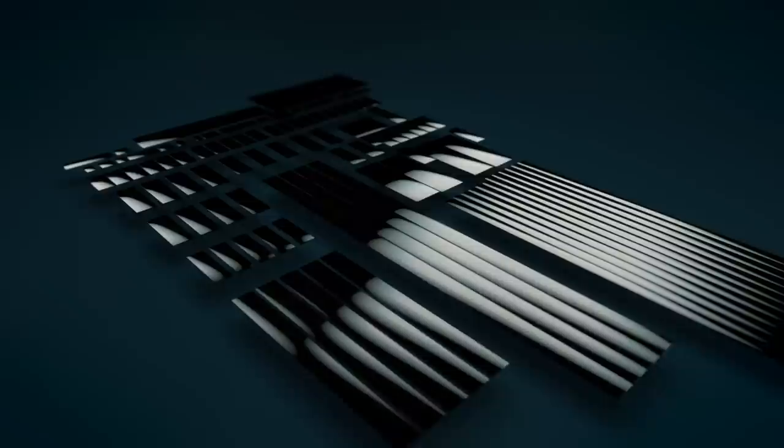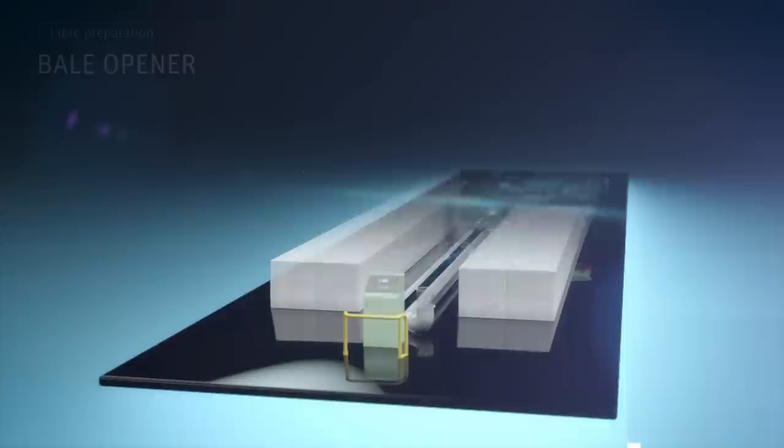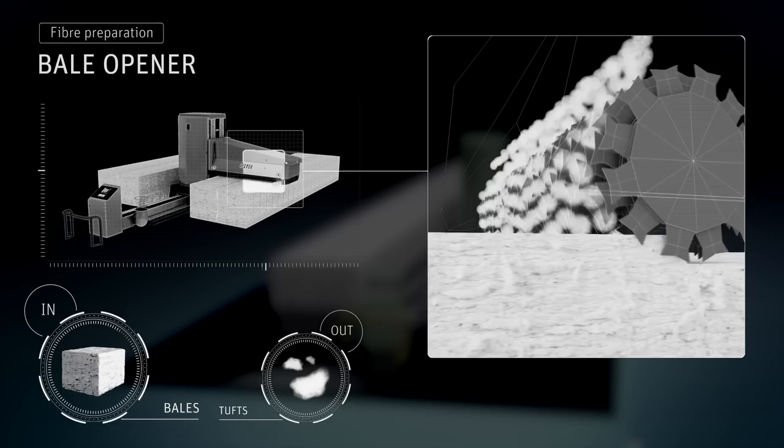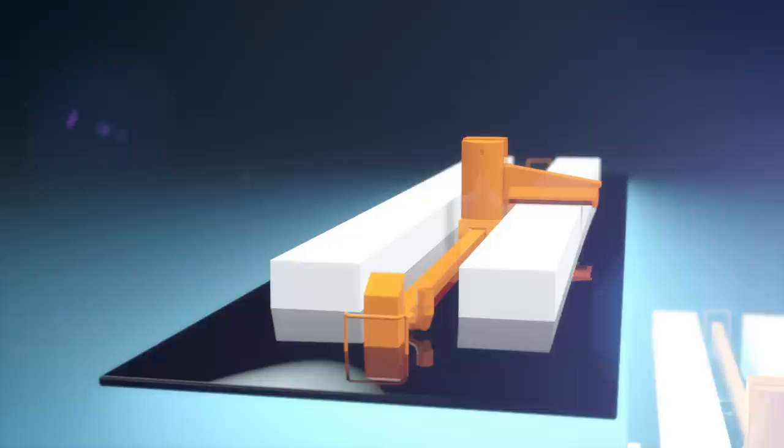For every yarn, production begins by preparing the fiber. In the blow room, the raw material is opened, cleaned, and blended. The bale opener removes the material layer by layer and gently separates the cotton into small tufts.